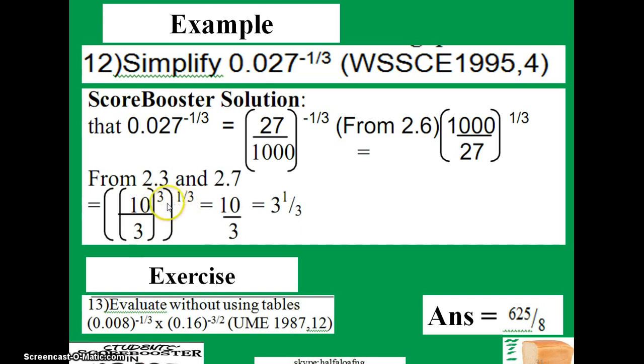The next thing is to open the bracket. By doing that, you're going to have 3 times 1/3. 3 is going to cancel out 3, so you're going to have 1. At the end, you're going to have 10/3.